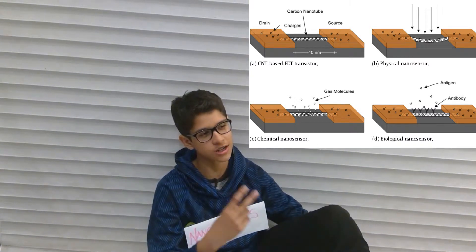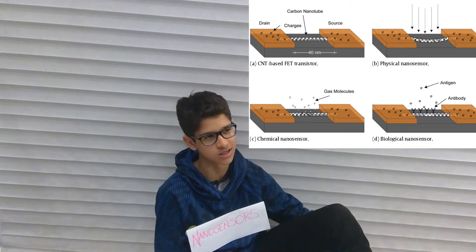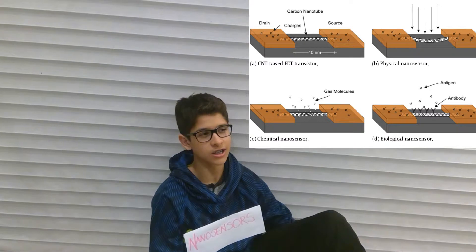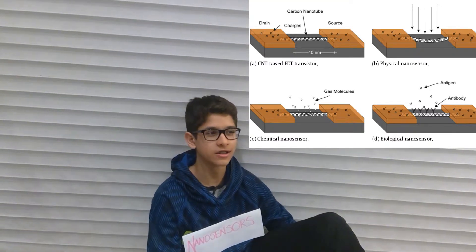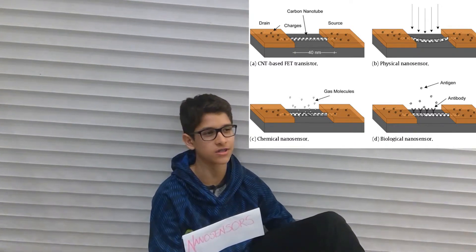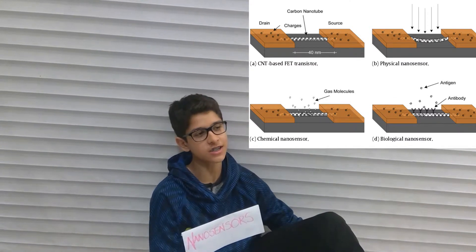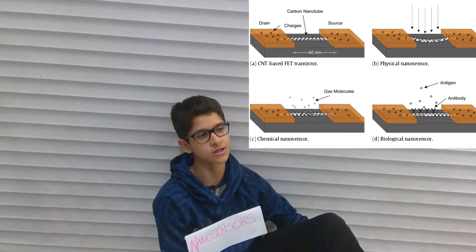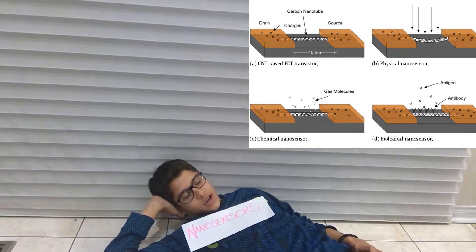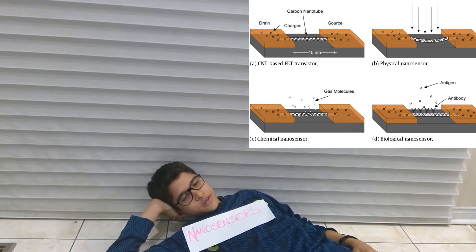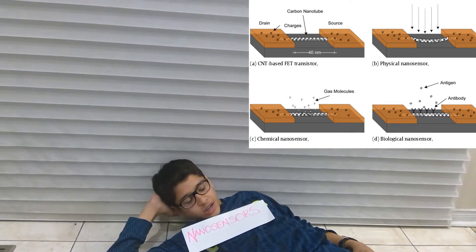The second type of nanosensors are chemical sensors. The change of electrons occurs when the chemical sensor interacts with different types of chemicals. Any change in electrons can send signals to the user. Another type of nanosensors are biosensors. The change of electrons occurs when antibodies lock onto antigens.